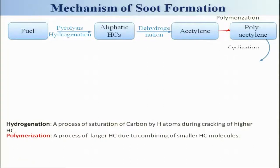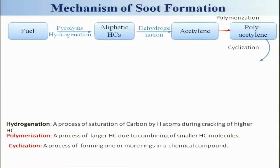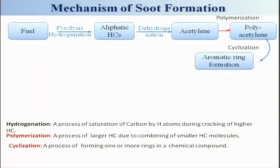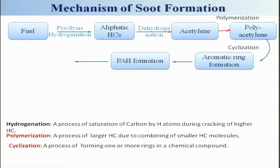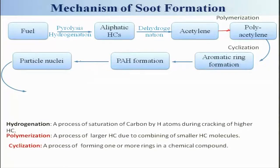After polyacetylene formation, there will be cyclization — the process of forming one or more rings in a chemical compound — because the ring structure is very important. That gives rise to aromatic ring formation, and then you will get PAH (polyaromatic hydrocarbon) formation. PAH is a very important precursor for soot; this PAH will now be converted into particle nuclei, which is the initiation of the soot particle.